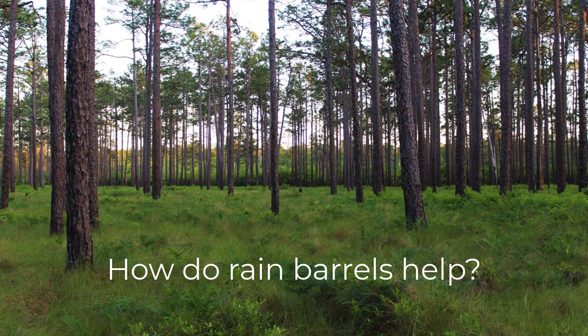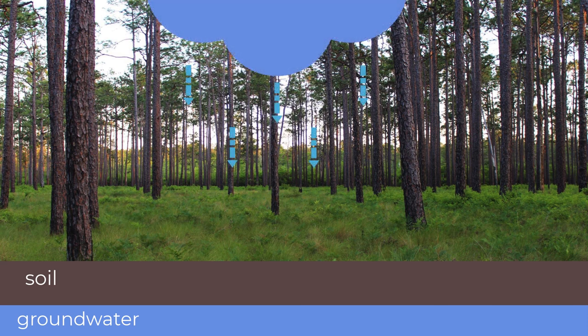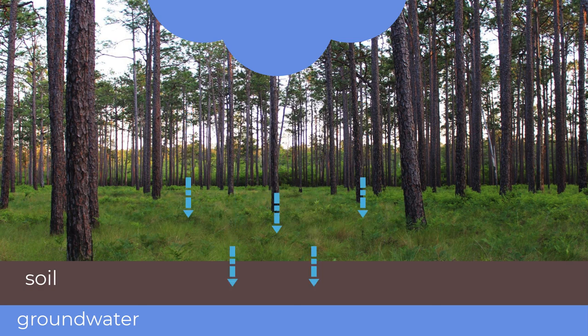In a natural landscape, much of the ground is permeable, meaning water can filter down into the ground. When it rains on a natural landscape, the water can pass through the soil and reach underground aquifers. The ground acts as a filter, cleaning out pollution that water may pick up on its journey from the clouds.